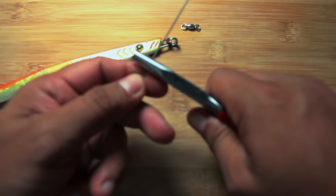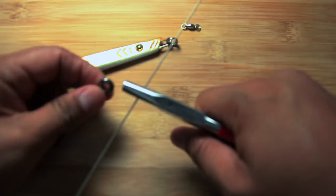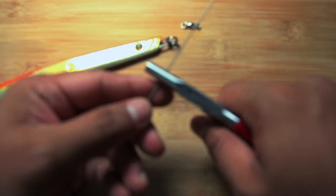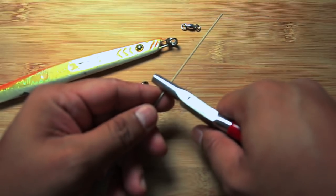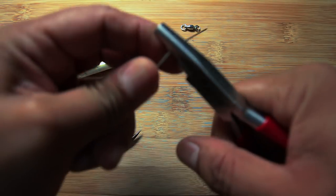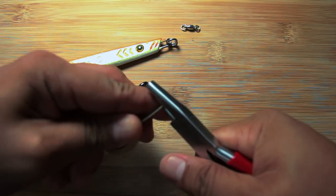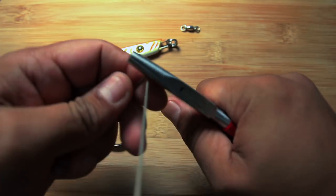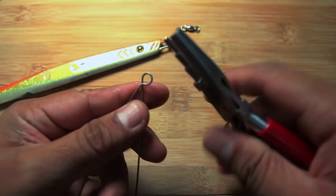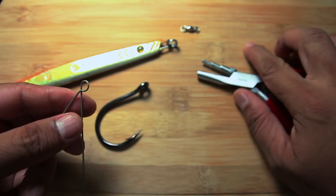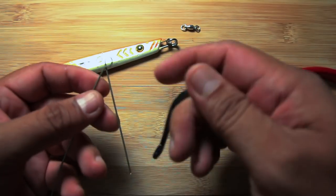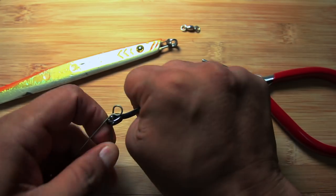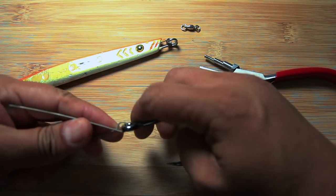Form a loop and your loop has to be big enough so that it fits your hook eye well. So form a loop. And I put a kink there just so it's easier for me, forms a better circle. All right, so like so.